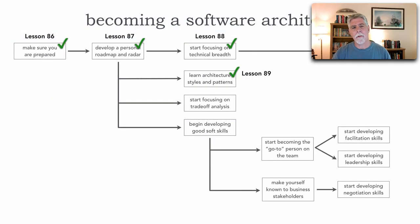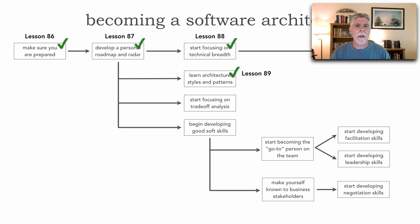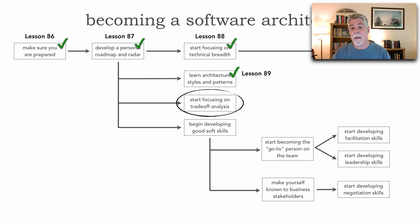In the past four lessons, we've taken a look at aspects of this roadmap. In lesson 86, I introduced the roadmap and talked about how to become prepared to enter into this journey of becoming a software architect. Then in 87, we developed a personal roadmap and radar. Lesson 88, we talked about technical breadth and industry knowledge. In the last lesson, number 89, we focused on learning about architectural patterns. In this lesson, number 90, we're going to focus on trade-off analysis.